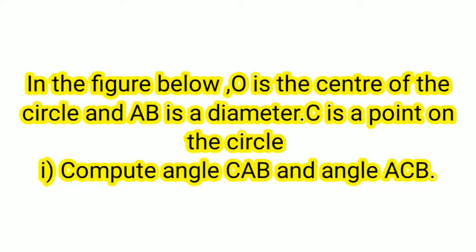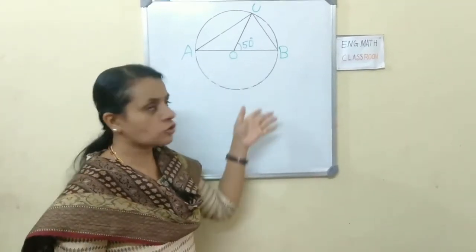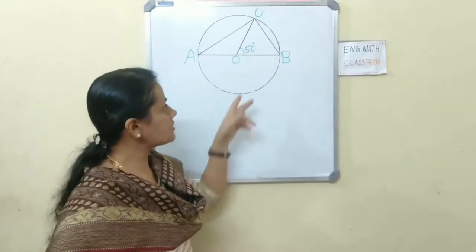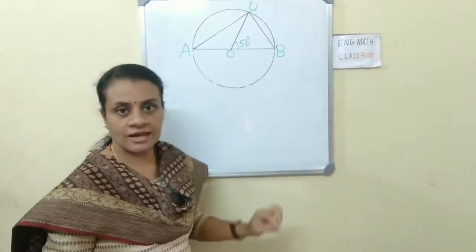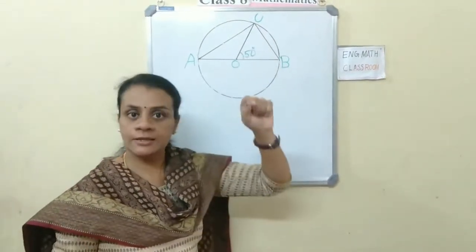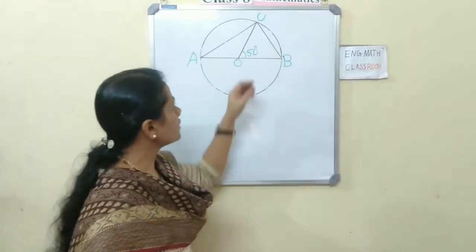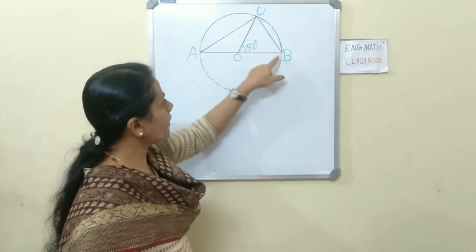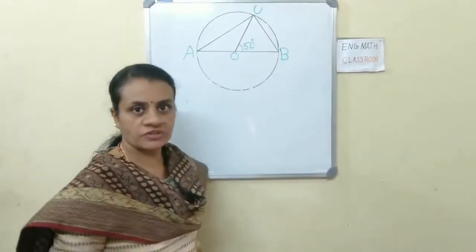In the figure below, O is the center of the circle and AB is the diameter. C is a point on the circle. Compute angle CAB and angle ACB. Draw the circle — AB is the diameter, O is the center, and C is any point on the circle. It is given that angle BOC is 50 degrees.